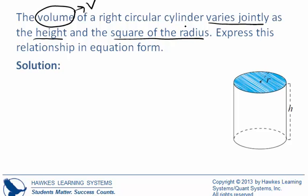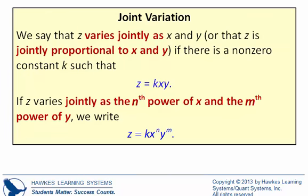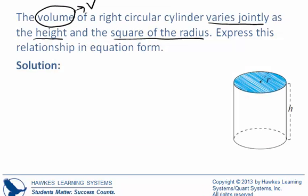Express the relationship in equation form. So if it varies jointly, we're going to use this first expression: z equals k times x times y. Now we will substitute in possibly different letters, but that is the format of the equation that we are trying to write. So it says that the volume varies jointly, so I'm going to use V equals k. It varies jointly as the height, so we'll use h for height, and the square of the radius, so this will be r squared.